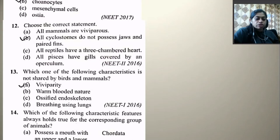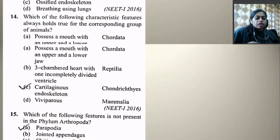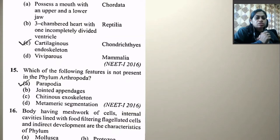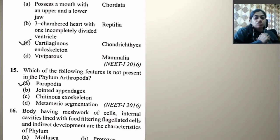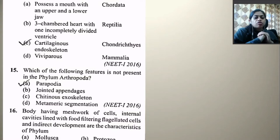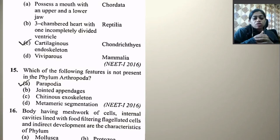Which of the following characteristic features always holds true for the corresponding group of animals? A mouth with upper and lower jaw in chordates — not always true. Three-chambered heart with one incompletely divided ventricle — not true in all cases. Cartilaginous endoskeleton in Chondrichthyes — this is true for every member. Viviparous Mammalia — some examples are oviparous, so this has exceptions.